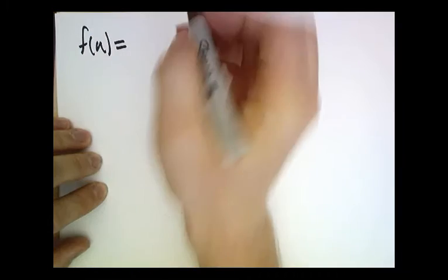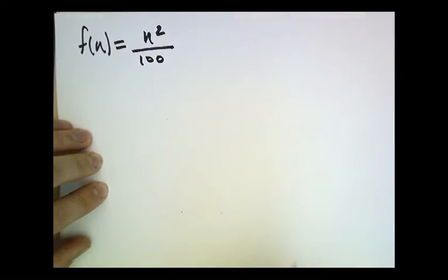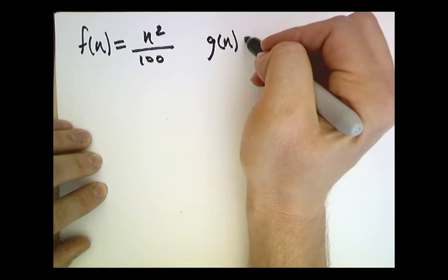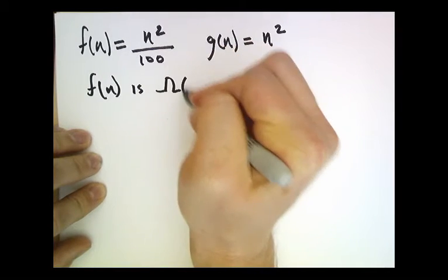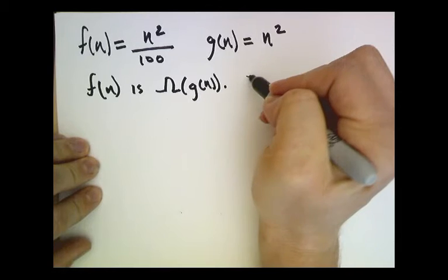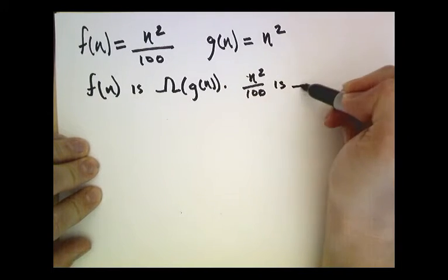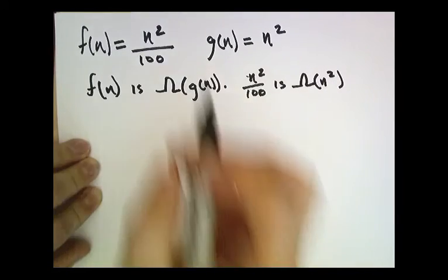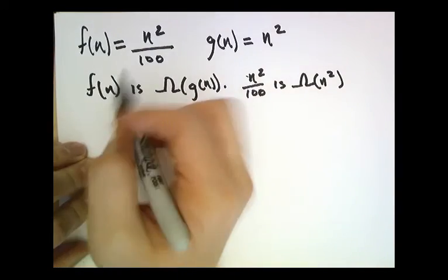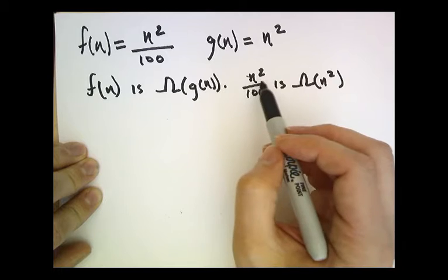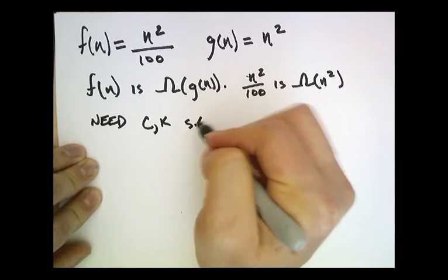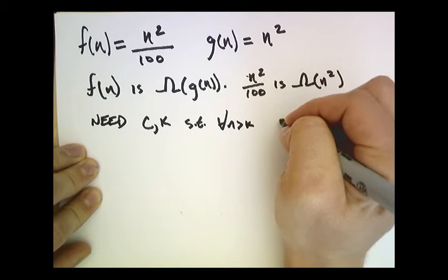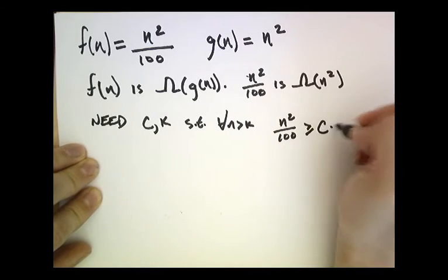Let's do an example. Let's let f of n be n squared over 100 and g of n be n squared. Then it is the case that f of n is big Omega of g of n. Just rewriting this, I'm saying that n squared over 100 is big Omega of n squared. We need to produce constants c and k such that for all n greater than k, n squared over 100 is greater than or equal to c times n squared.